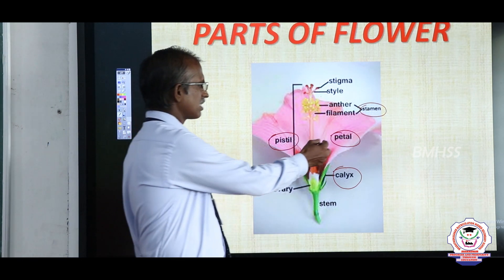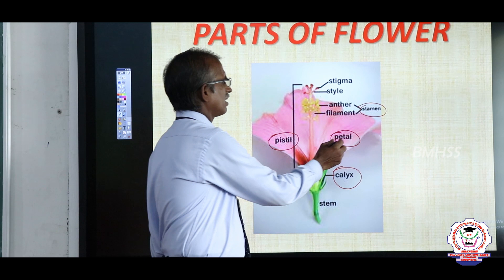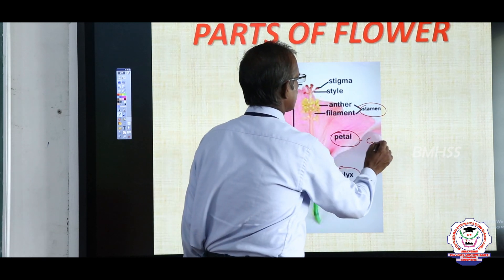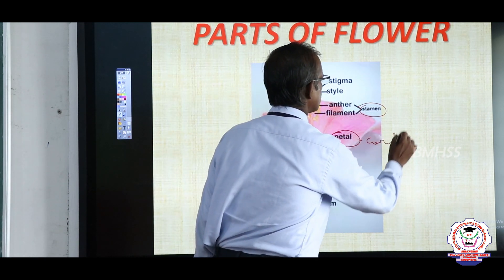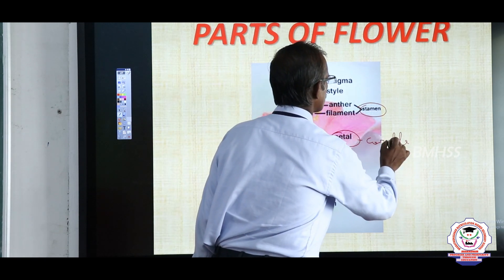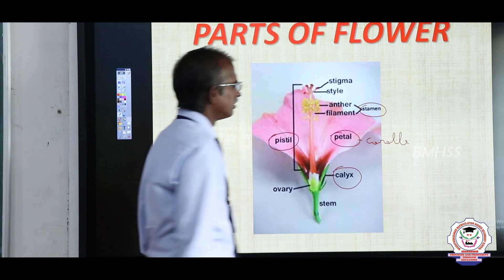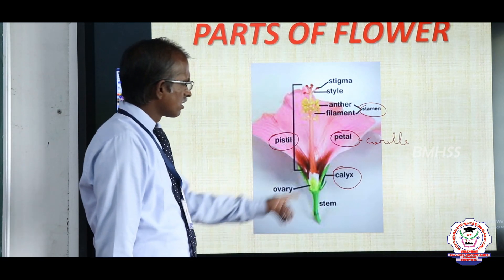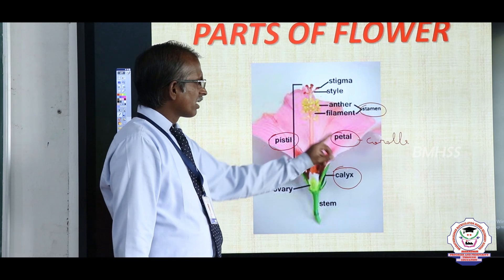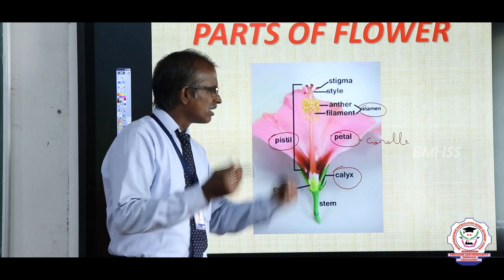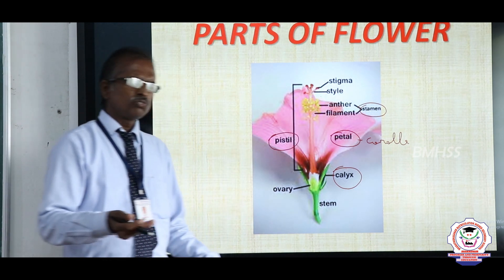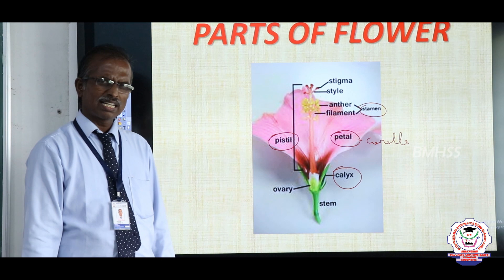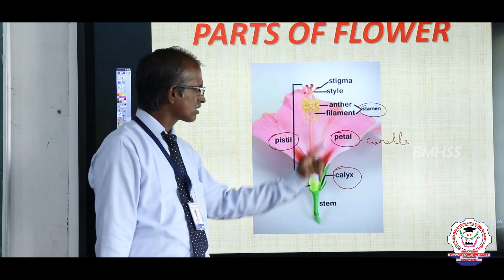The next whorl is called petal, otherwise we call it corolla. The petals are brightly coloured, which attract insects — this is the second whorl.